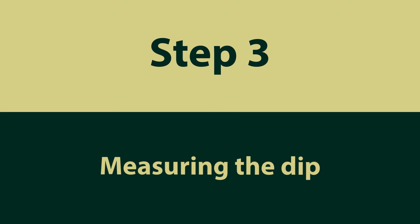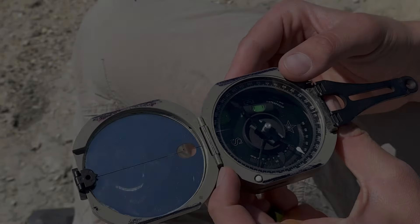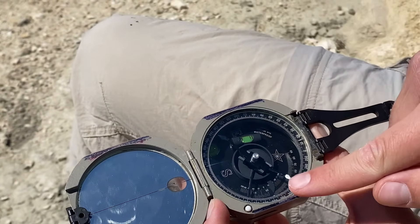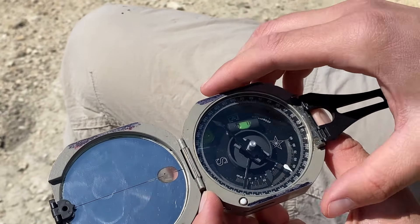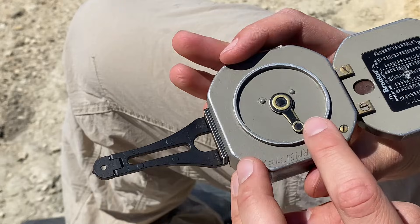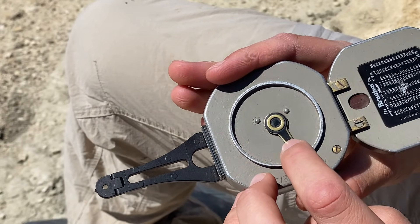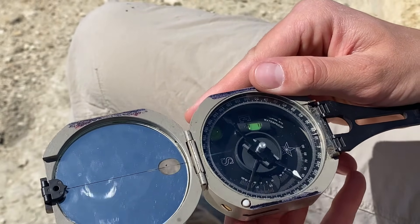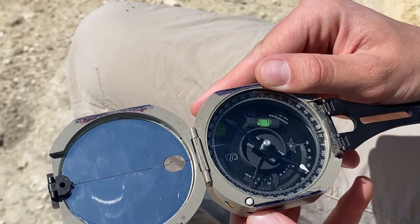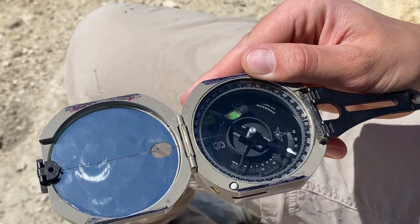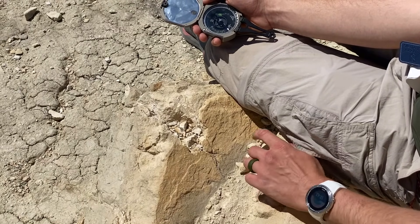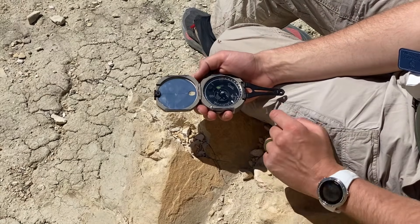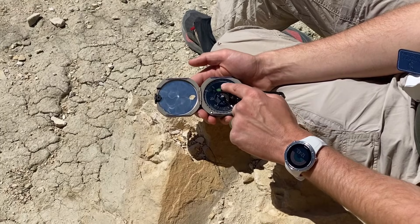Step three: measuring the dip. The inclinometer is used to measure the dip of the surface and comprises three important parts. The first is the torpedo level, located atop the inclinometer inside the compass body. Opposite the torpedo level is an arm with a centerline used with graduations for dip — two 0-to-90-degree arcs printed on the inside of the compass body. The position of the inclinometer is adjusted using an arm on the back of the compass. Remember, dip must be measured in a vertical plane oriented perpendicular to the line of strike, and the inclinometer and compass must be oriented vertically with the torpedo level on top.